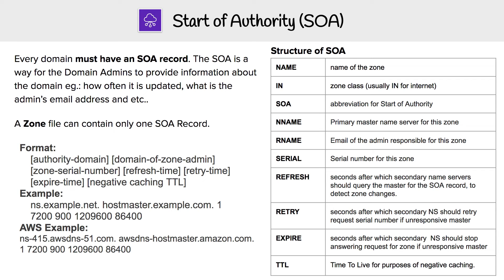You can only have one SOA record within a single zone — you can't have more than one. It's just to give additional information, and it's absolutely required.